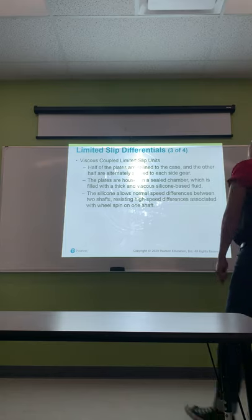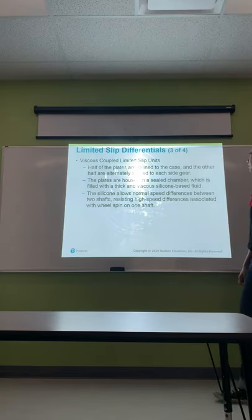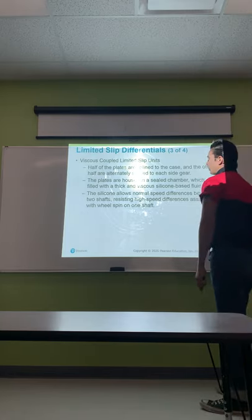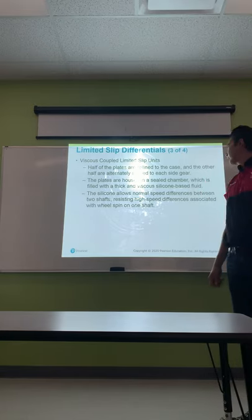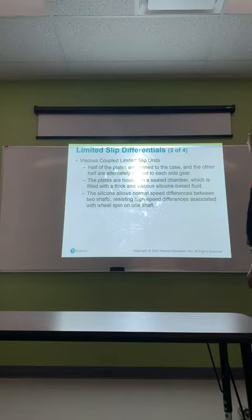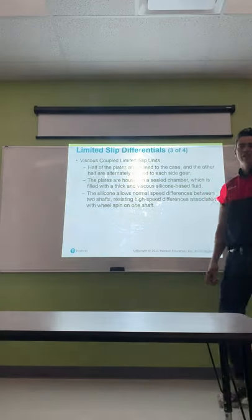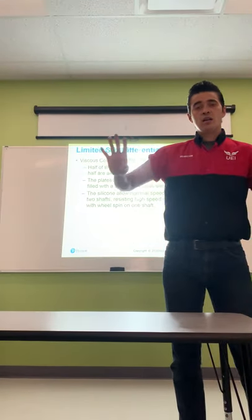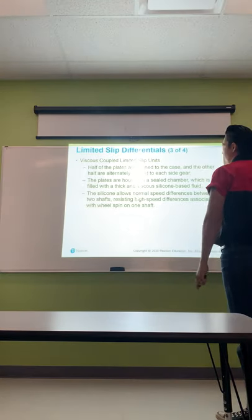Viscous coupled limited slip units: half of the plates are splined to the case and the other half are alternately splined to each side gear. The plates are housed in a sealed chamber filled with a thick, viscous silicone-based fluid. The silicone allows normal speed differences between the two shafts while resisting high-speed differences associated with wheel spin — when speeds increase, the clutches lock up together, causing both wheels to spin at the speed of the carrier.